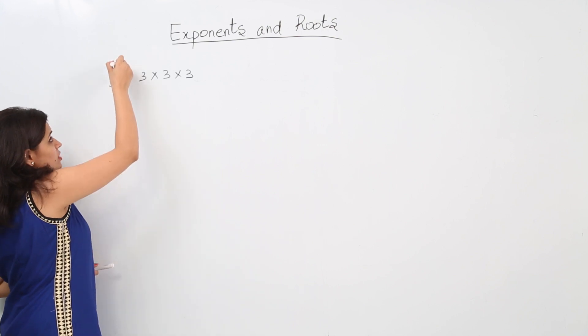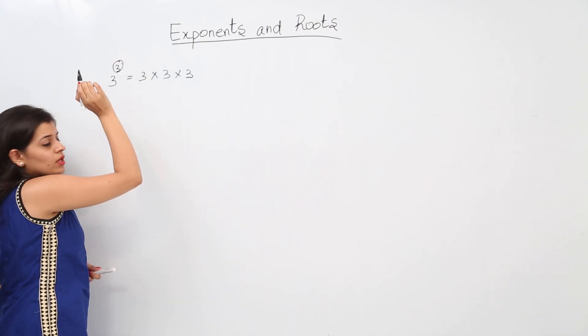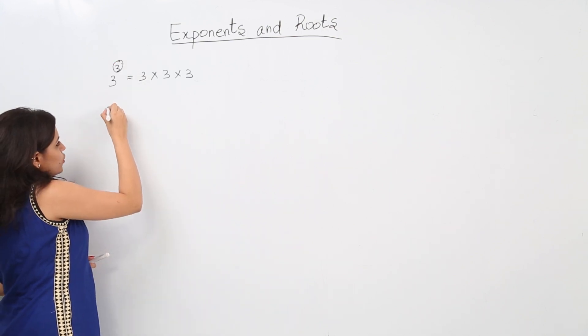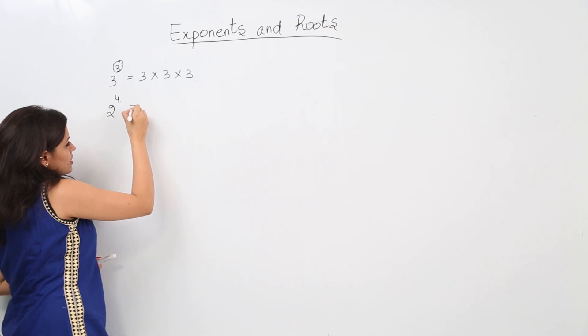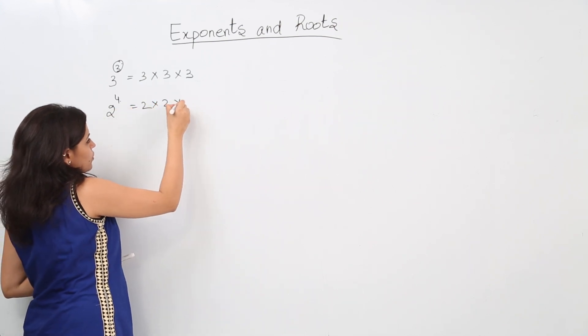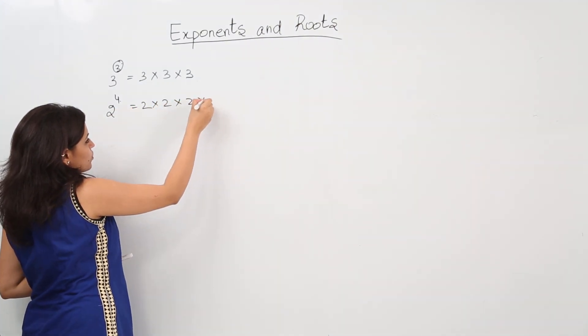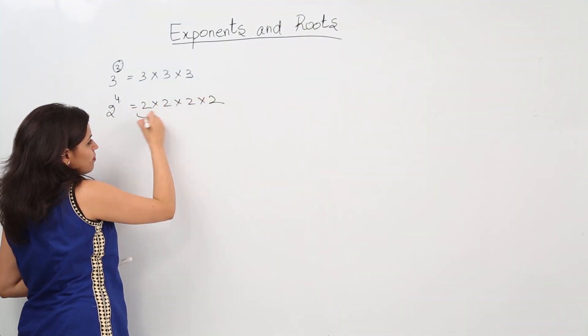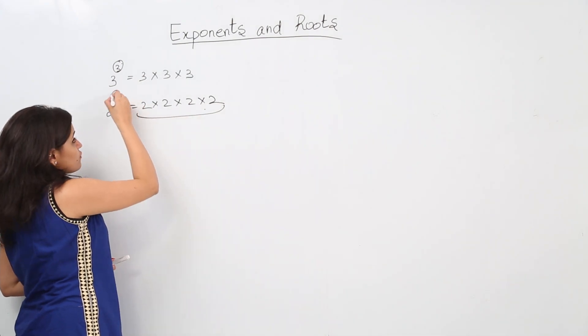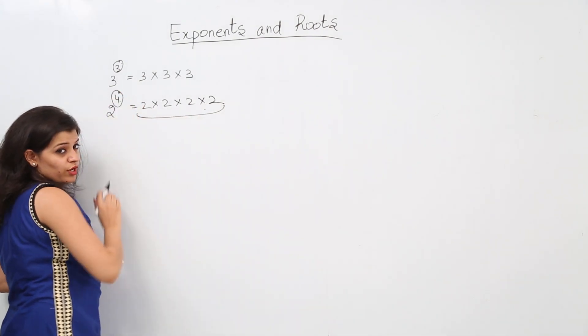In this case the exponent is 3. If we have 2 raised to power 4, this means 2 × 2 × 2 × 2 — we have multiplied 2 four times. In this case, 4 is the exponent.